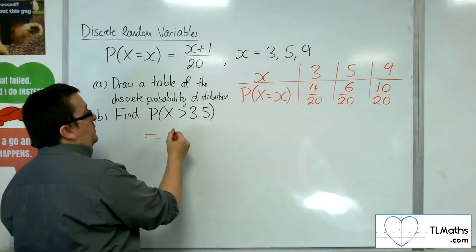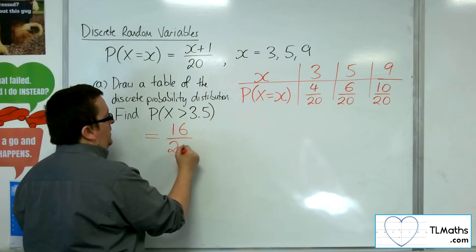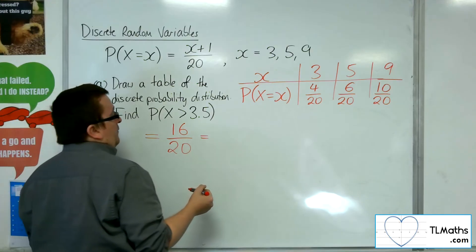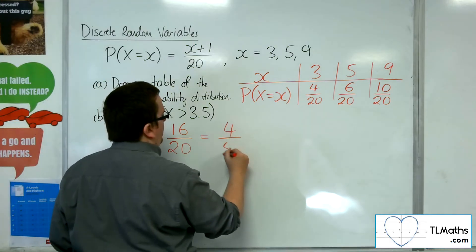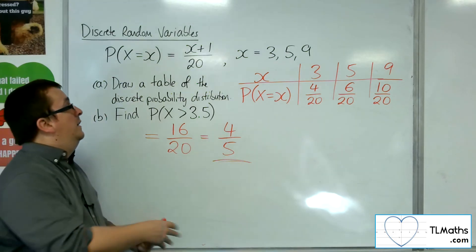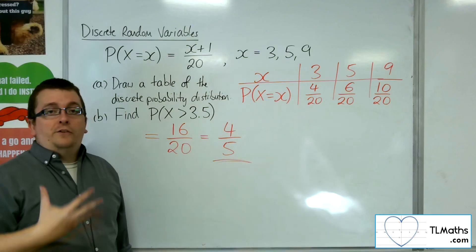So that would be 6 over 20 plus the 10 over 20, so 16 over 20, which can be simplified down to 4 fifths. Okay, so that's how we can deal with a probability distribution given as a function.